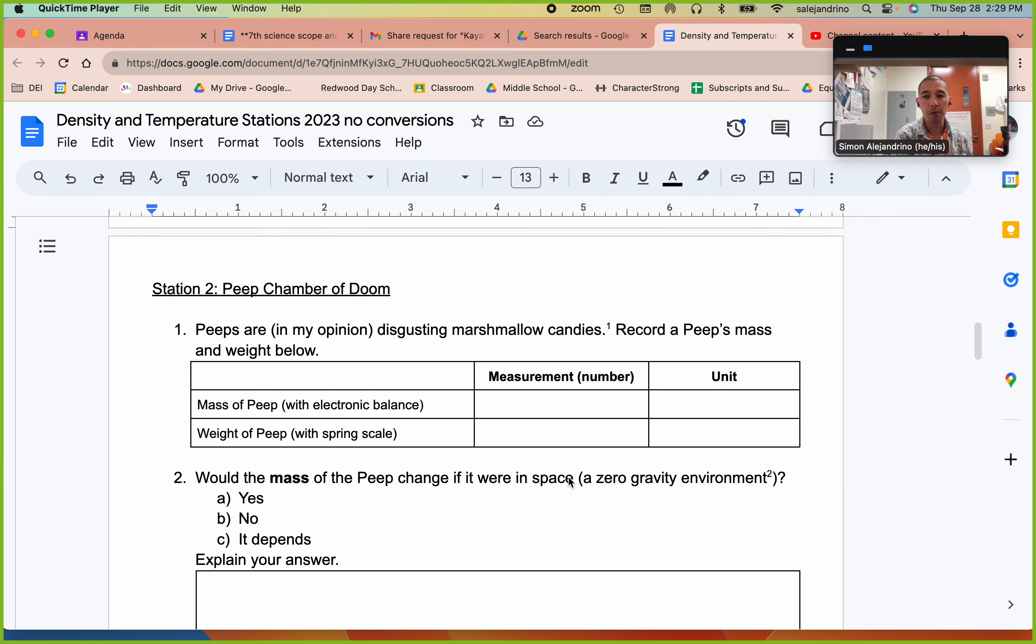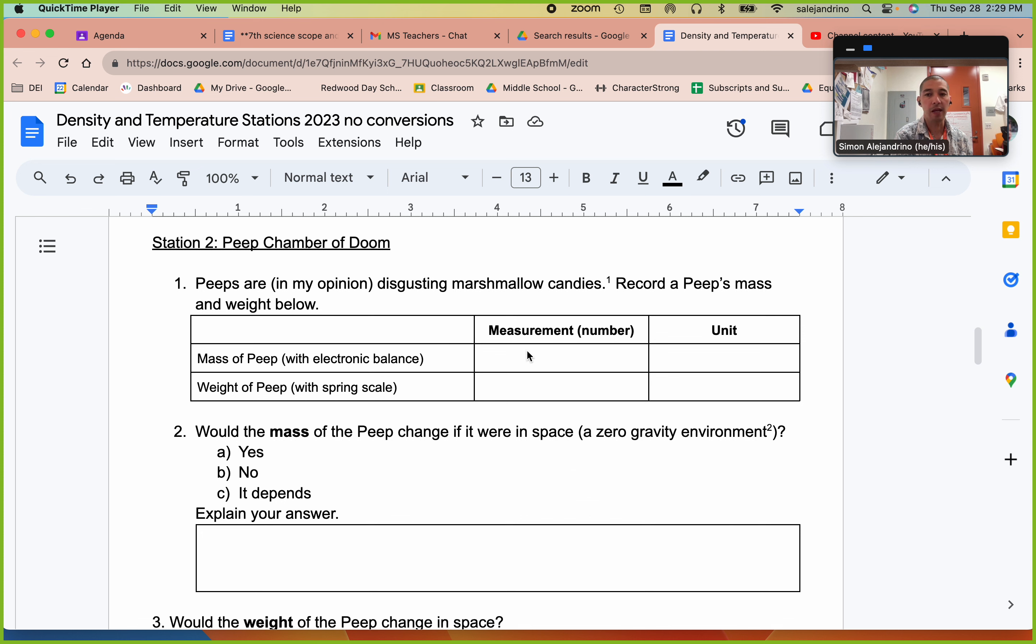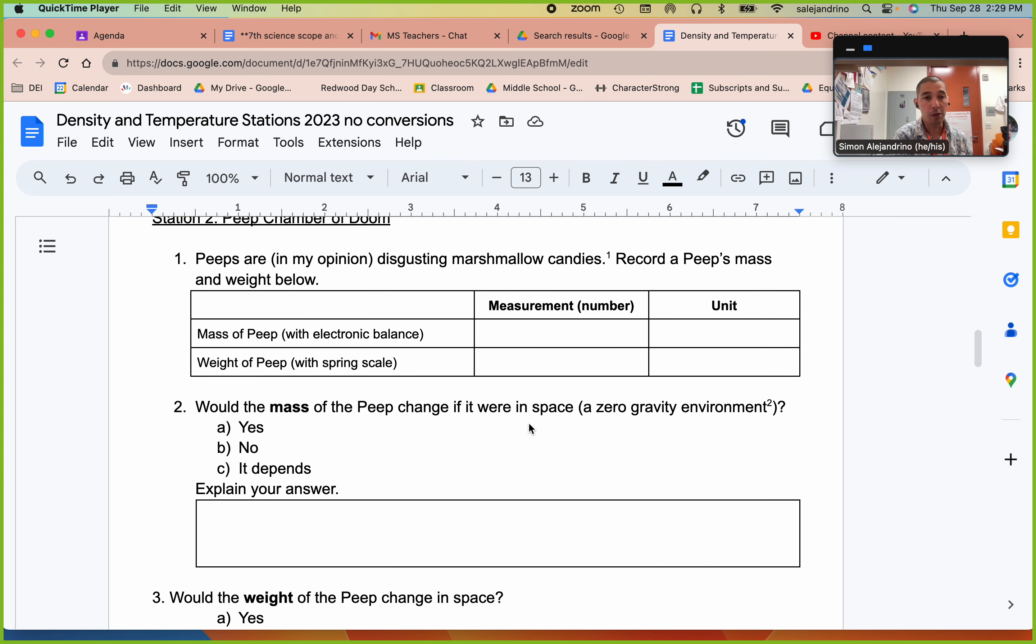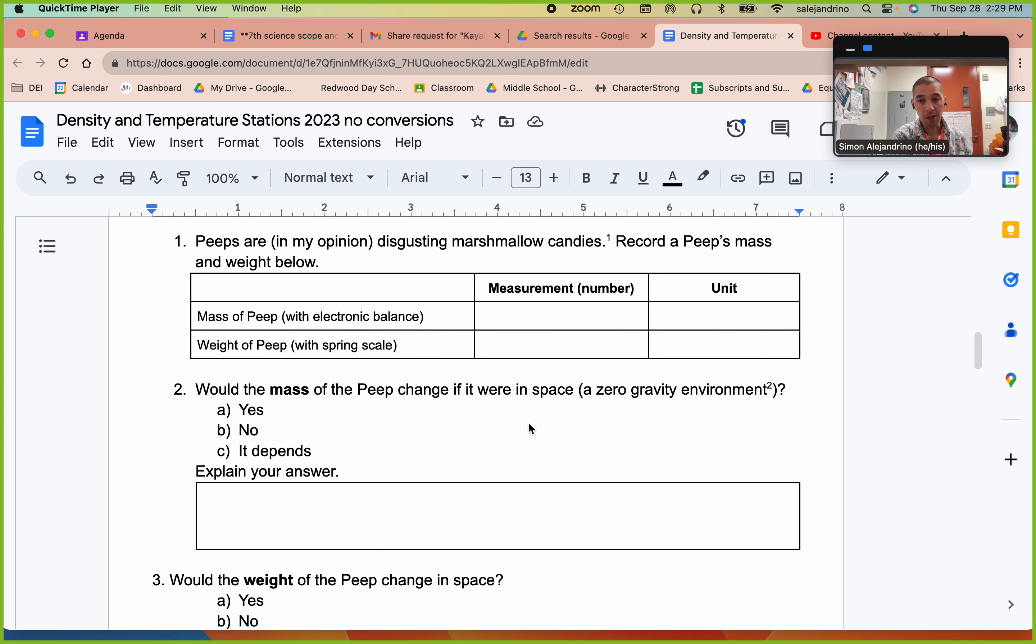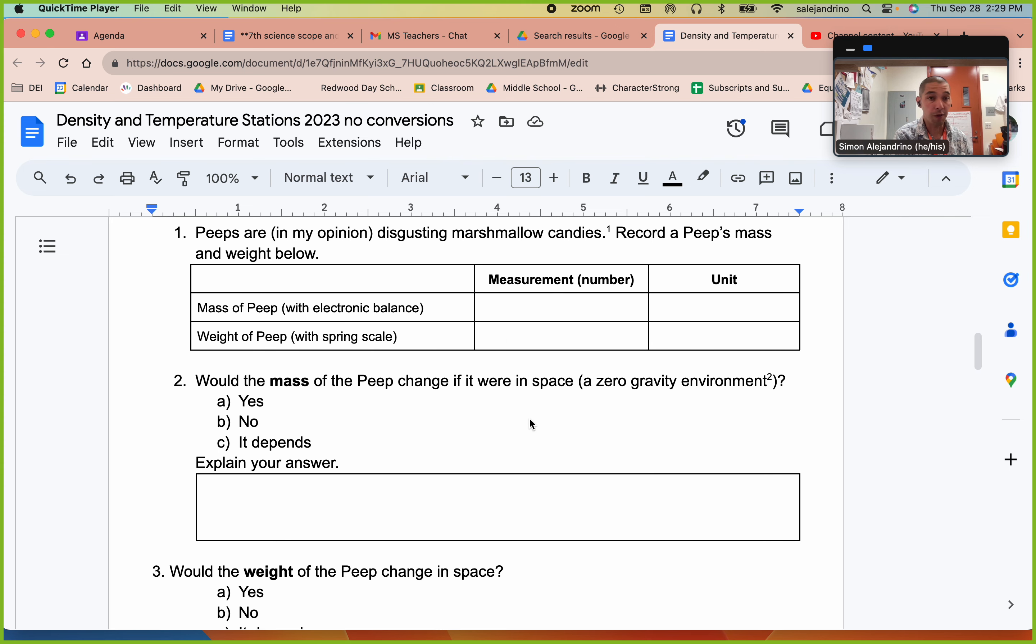A peep chamber of doom. So what you should have seen is that the mass and the weight of the peep are quite different. One is measured in grams and one is measured in newtons. The reason they're different is because they're measuring different things. Mass measures the amount of matter in the peep in grams. Weight measures the pull of gravity on the peep in newtons.